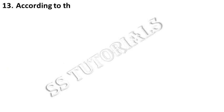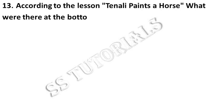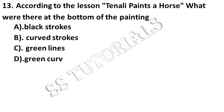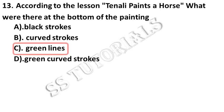According to the lesson, Tenali paints a horse. What were there at the bottom of the painting? Answer: Green lines.